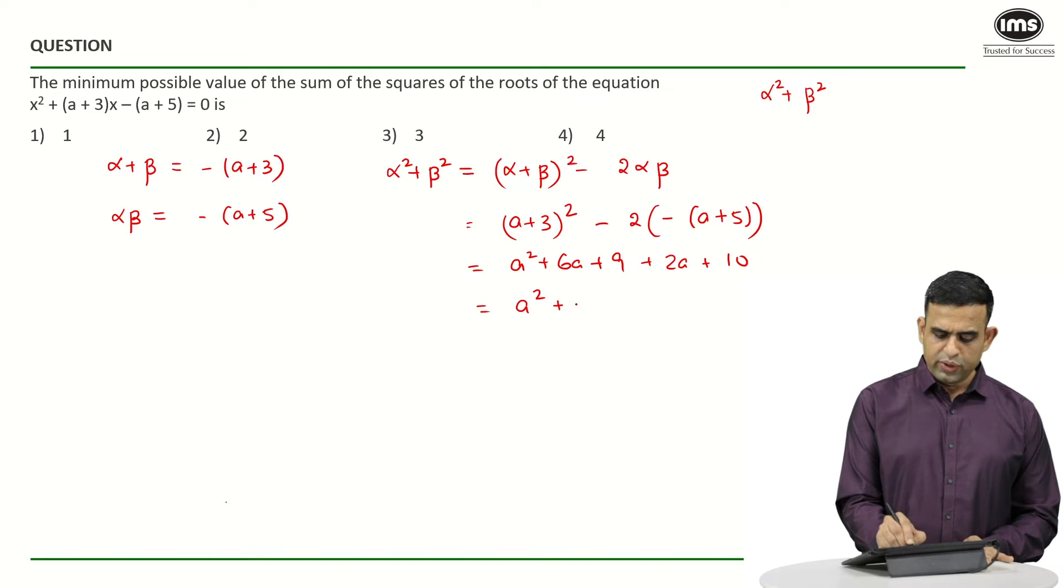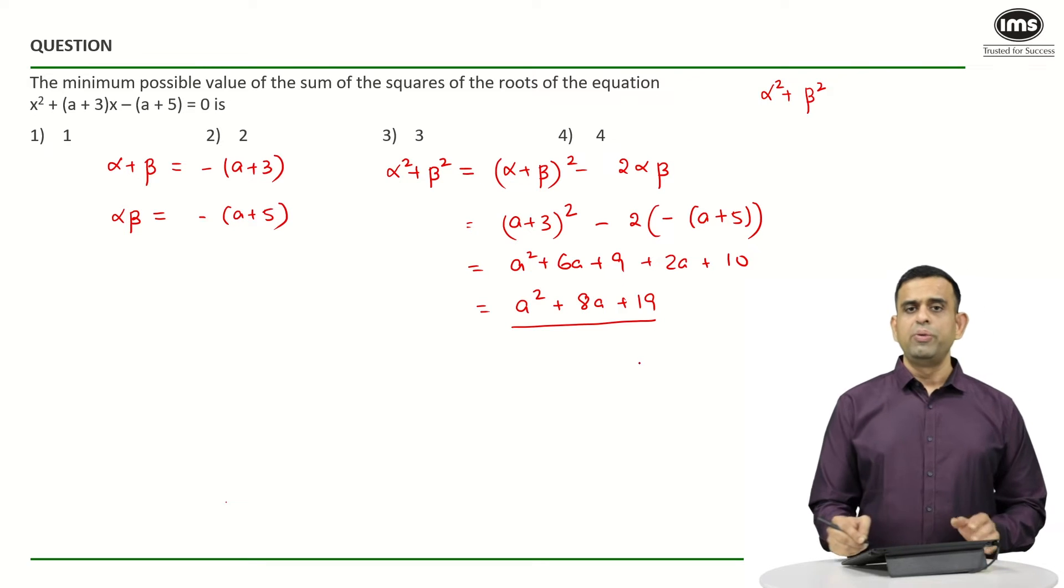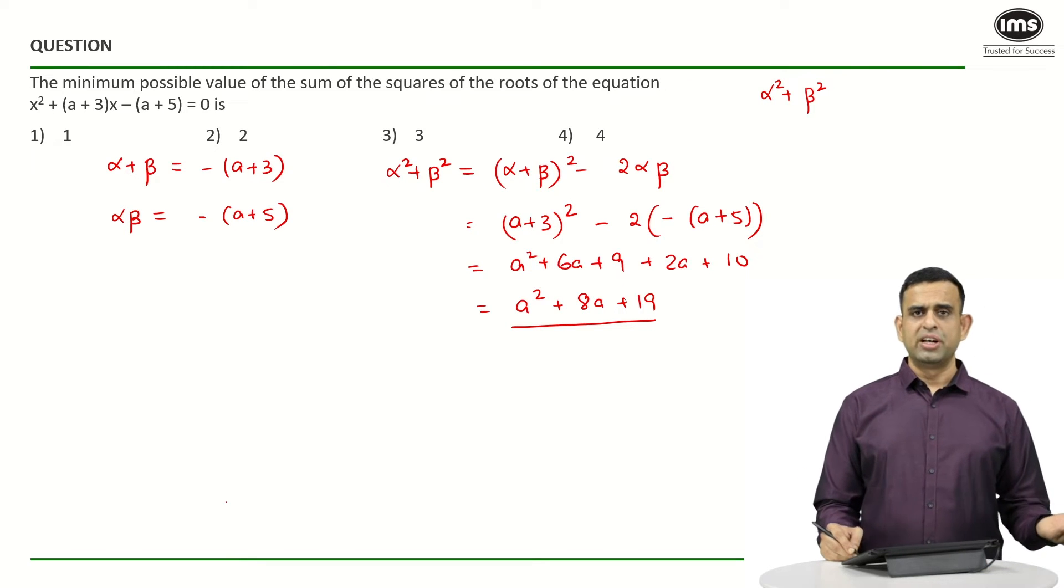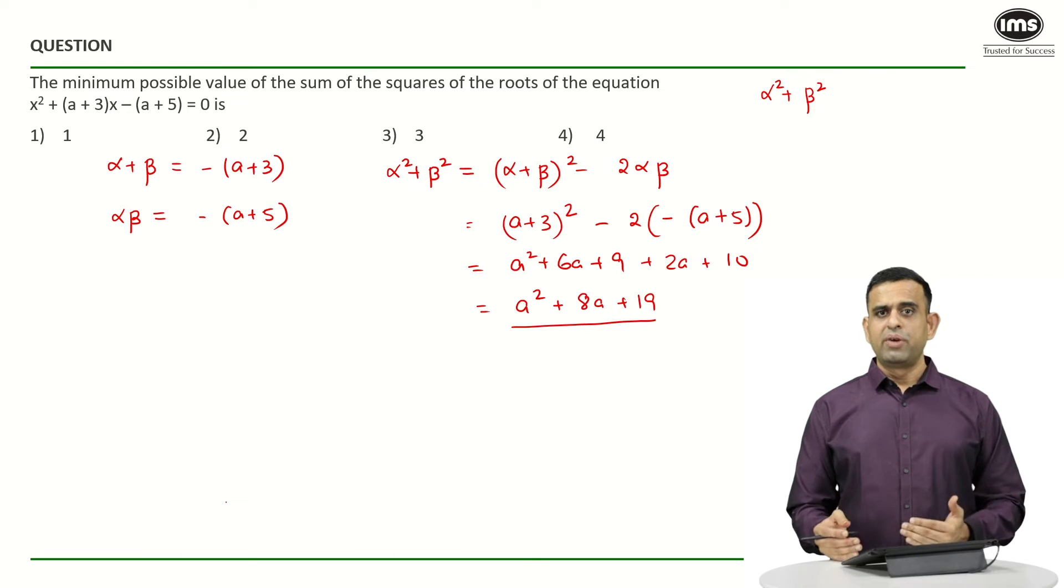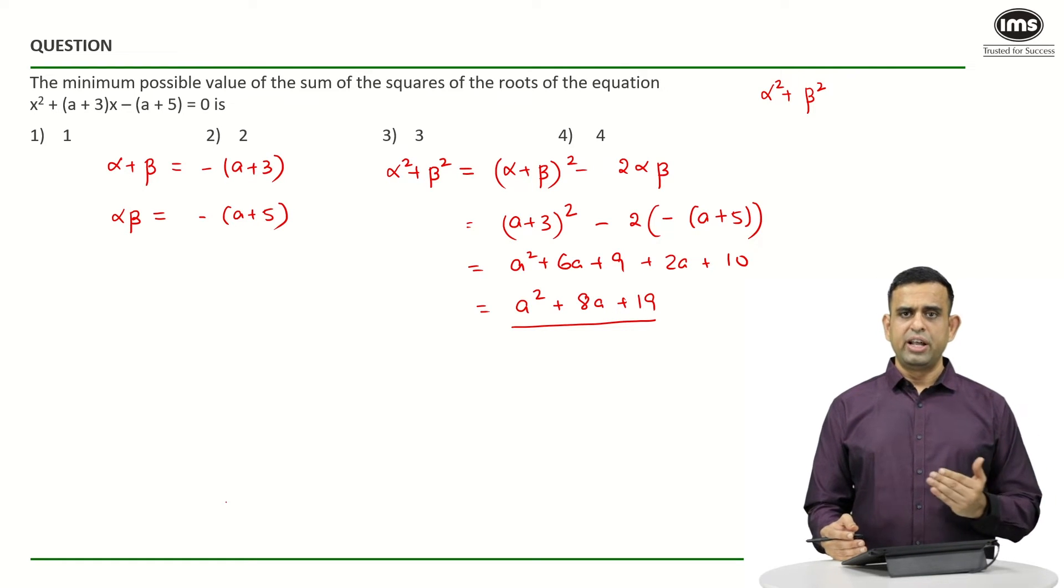So now we get a² + 8a + 19. And since I want to minimize the value of α² + β², in other words, we have to minimize the expression a² + 8a + 19.